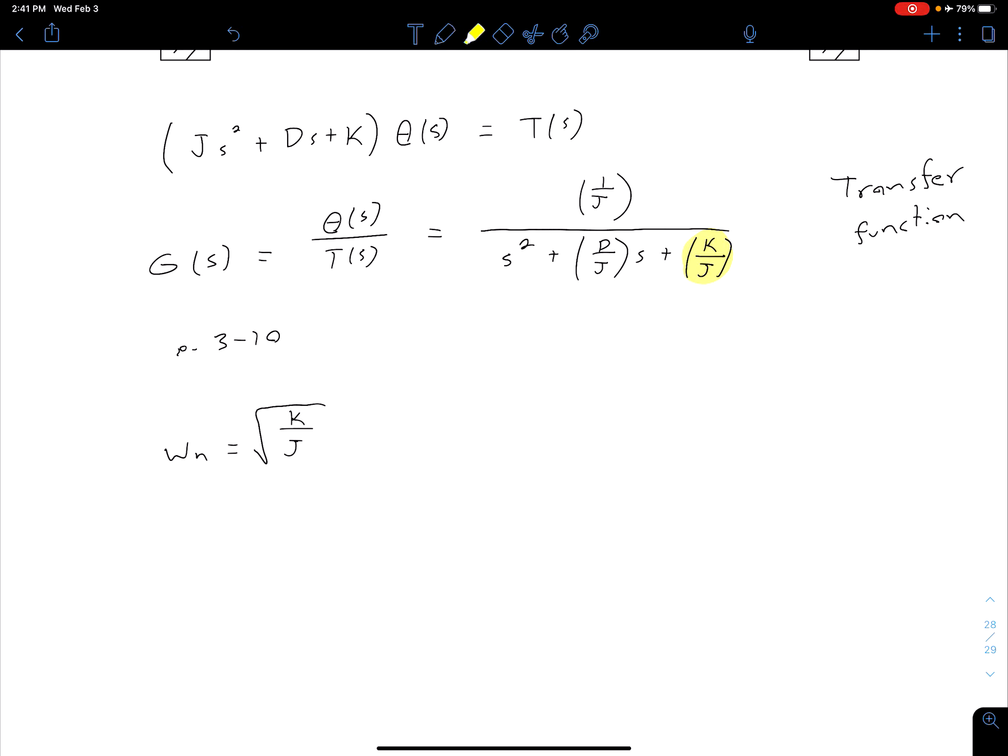Now the term in the middle of the denominator, this is related to our omega and our zeta. So we can say that 2*zeta*omega_n is equal to D/J. Again that's just a direct comparison of this transfer function shown here and the general equation that we've worked with before.